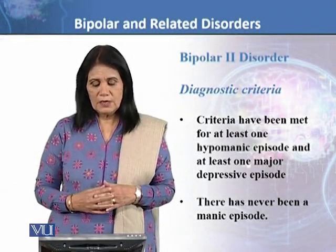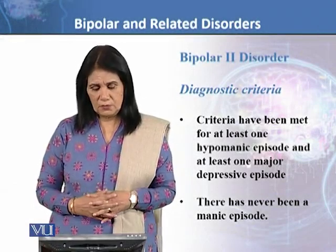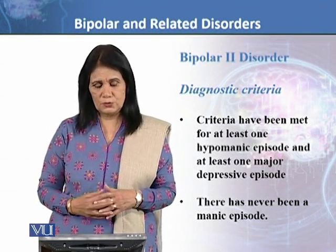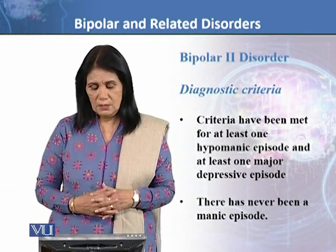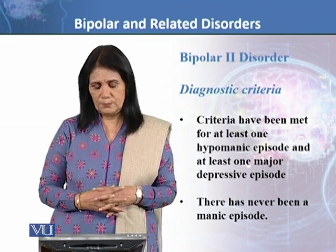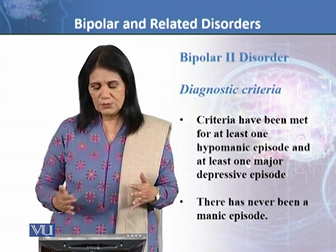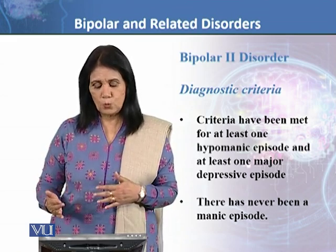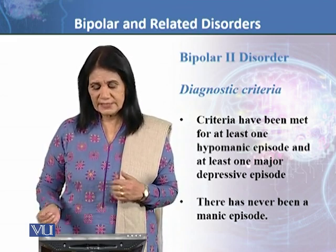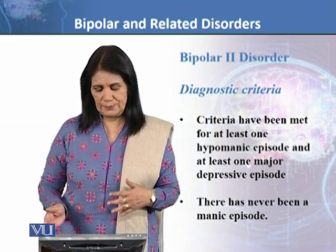Now, we will talk about the second category of bipolar disorder, that is Bipolar 2 Disorder. Its diagnostic criteria is mainly hypomania — a hypomanic episode and at least one major depressive episode. There has never been a full-fledged manic episode.